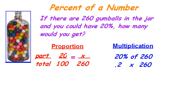To find the actual percent of a number, you have two choices. You can use proportions or you can use multiplication. We're going to work this problem both ways. If there are 260 gumballs in the jar and you could have 20% of them, how many would you have?